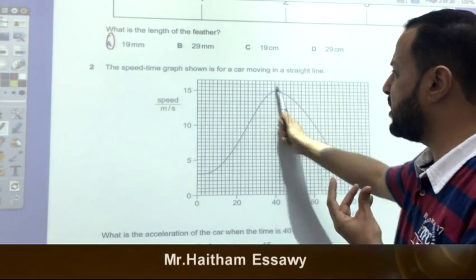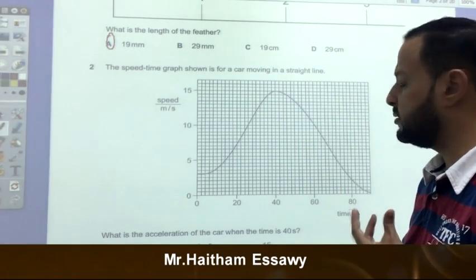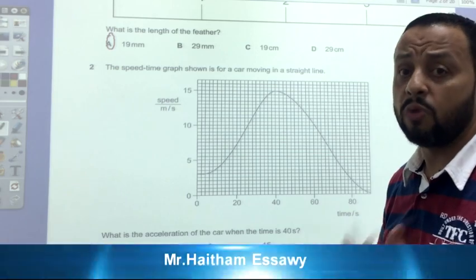So the acceleration equals 15 divided by 40. So this is the right answer? No, this is the wrong answer. Why?